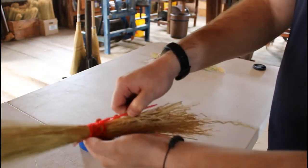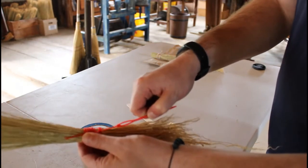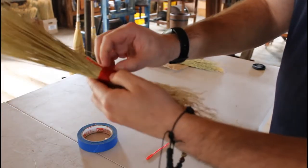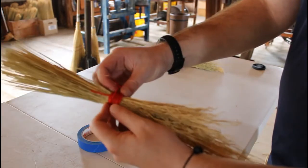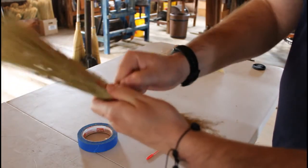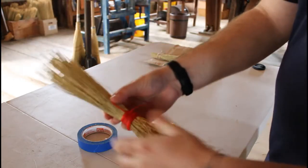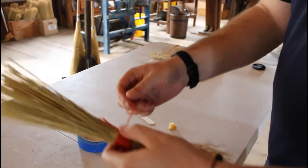And then what we're going to do is we're going to pull this through like this and what it's going to do is it's going to pull that string underneath your cord here, your twine, and that's going to actually tie off your broom. And so you can clean it up now, pull it nice and tight, just like that.